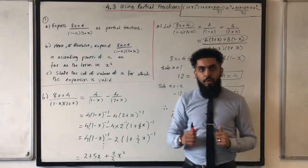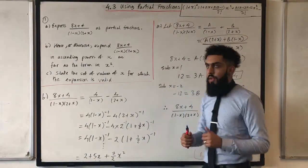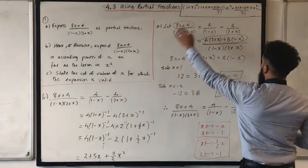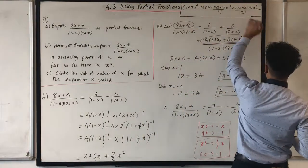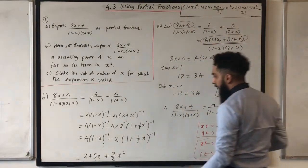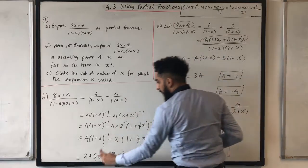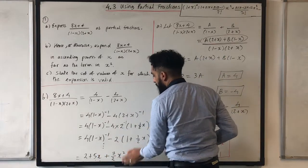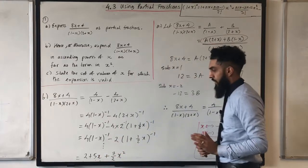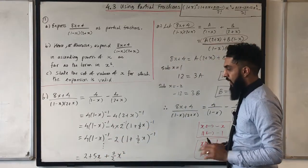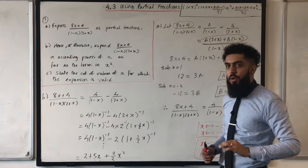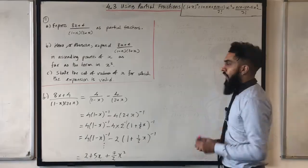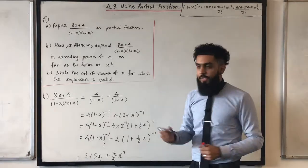Using the binomial expansion formula, you should all have 2 plus 5x plus seven-halves x squared. That is the final answer. Let's have a look at part C.